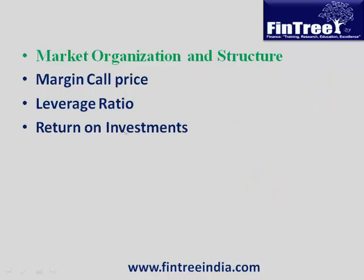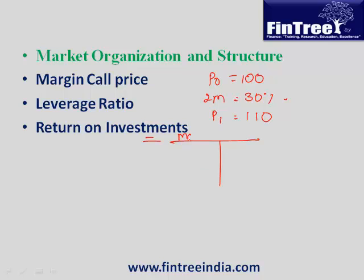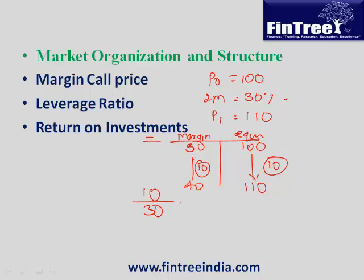Next is return on investment. Say you purchased a stock at 100 with an initial margin of 30%, and by end of year the stock becomes 110. Make a T-table: margin account on one side, equity on the other. You invested 30; the stock gained 10. So return on investment is 10 divided by 30, which is 33.33%.